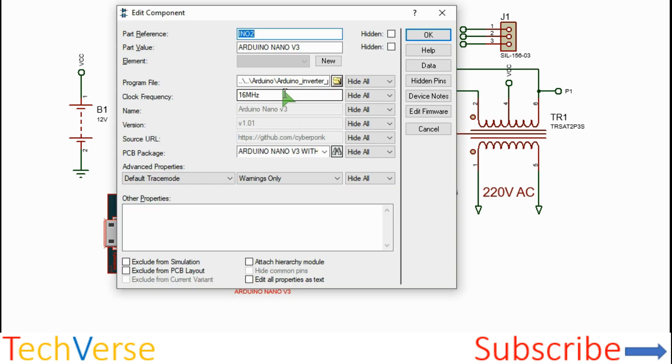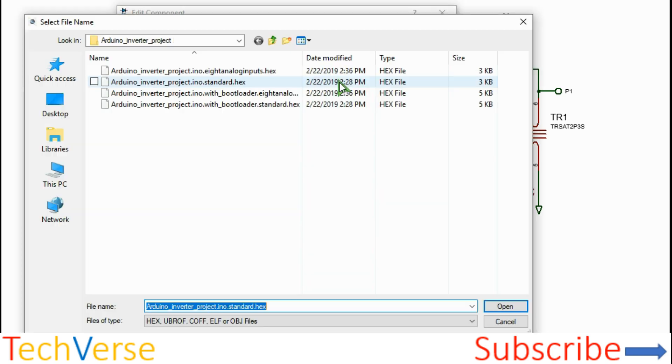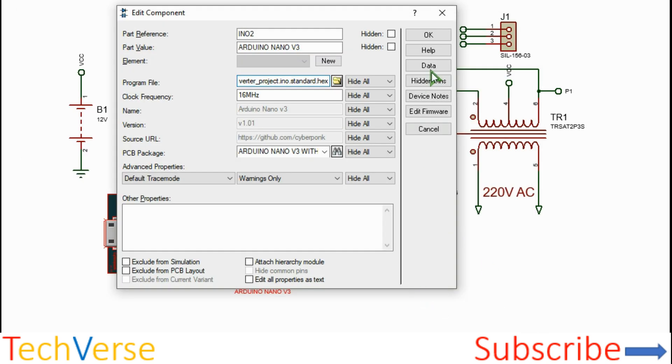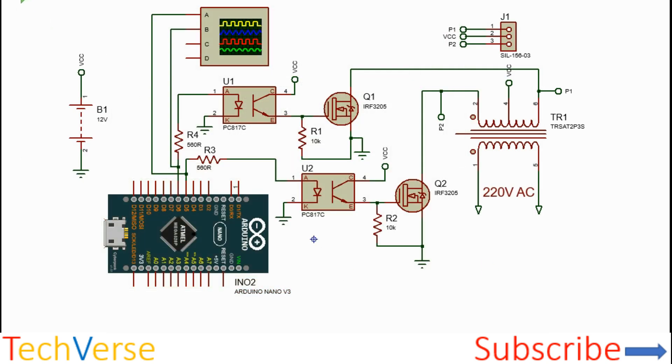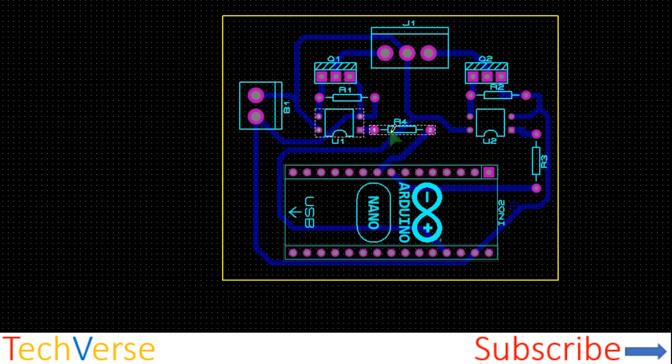To upload the project, you just double-click on the Arduino, then locate the hex file. In this case it is this one. And click open. It will be automatically loaded to the Arduino, and basically that's all about it. The PCB for the project looks as shown.